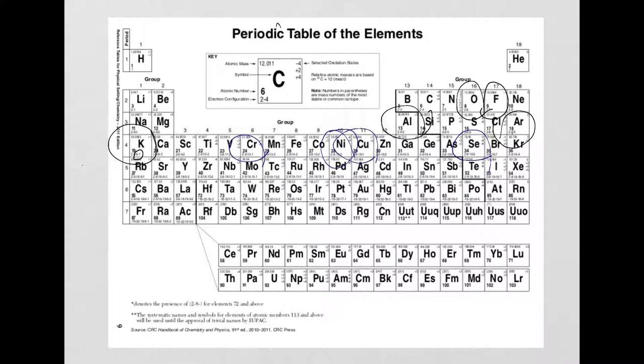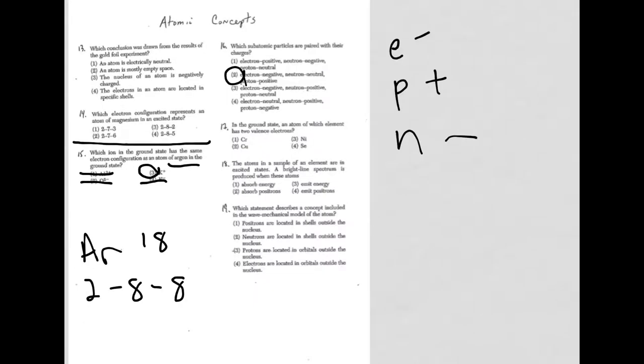So we're looking for two valence electrons. Well, when you go through, this is only one. For chromium, nickel, that's my answer. It's got the two. Copper only has the one. And the selenium, I believe, is six. Yep. So the answer there has to be choice three.